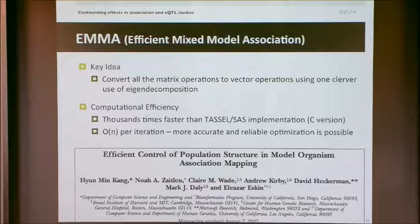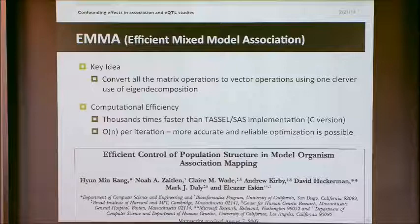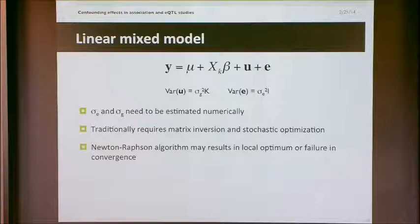We came up with a method called Emma for doing the estimates. K is the pairwise genetic relatedness between individuals estimated from all the SNPs — essentially a kinship or genetic similarity matrix.